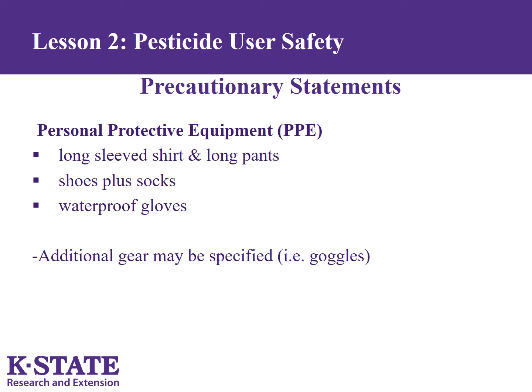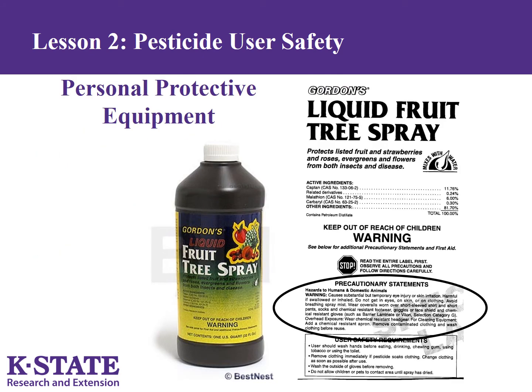The label lists what personal protective equipment needs to be worn while applying the product. Most homeowner products list long-sleeved shirt, long pants, shoes and socks, and chemical-resistant gloves. Products can also list additional personal protective equipment like goggles or a face shield. Some labels require chemical-resistant footwear, and for overhead exposure, chemical-resistant headgear. For cleaning equipment, add a chemical-resistant apron. Read the label to determine what types of personal protective equipment are required.